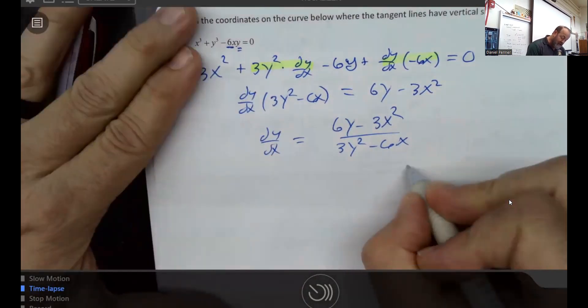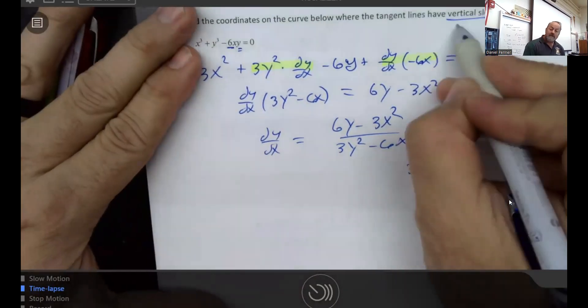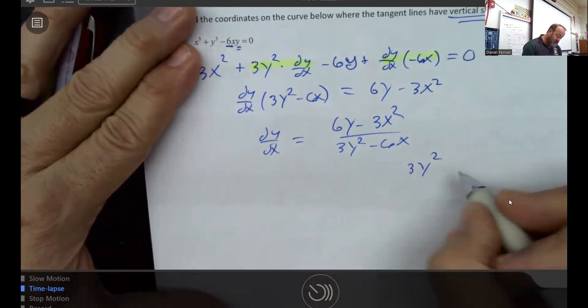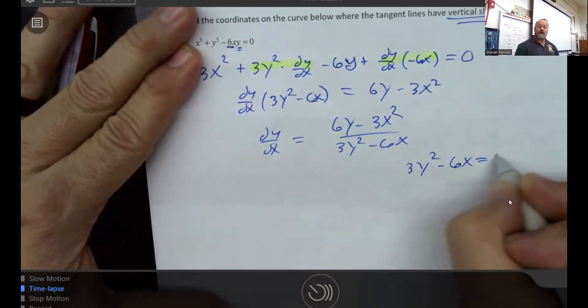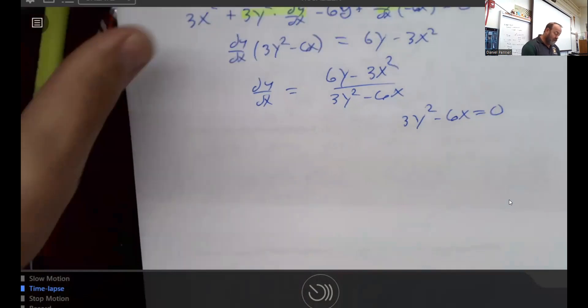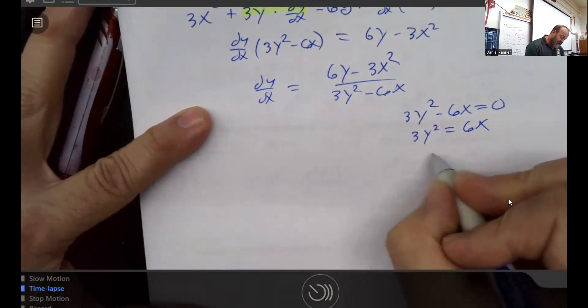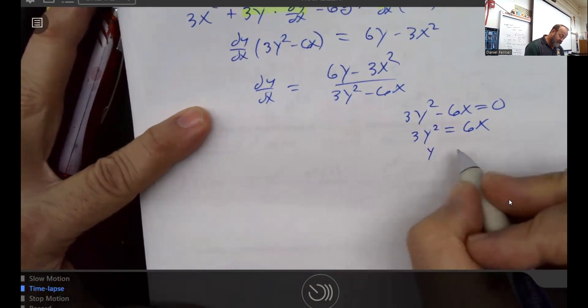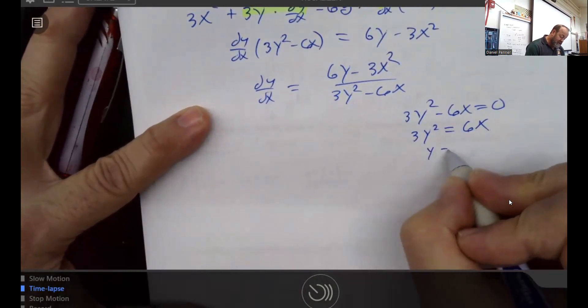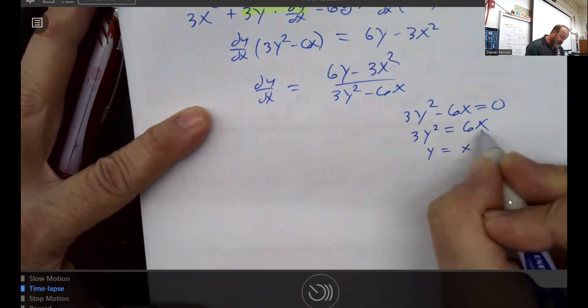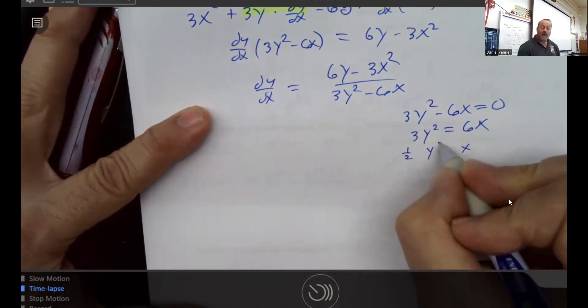So I want to know, when is the denominator 0? Because that's where the slope would be undefined. So I want to know, where is the denominator 0? Well, by doing a very little bit of math, I could find out that x itself, if we divided both sides by 6, is (1/2)y².